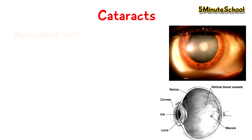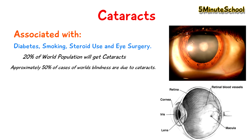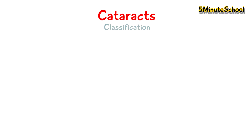Cataracts are associated with diabetes, smoking, steroid use, and eye surgery. Cataracts are quite common — it's expected that about 20% of the population will get them, and half the cases of blindness throughout the world are due to the formation of cataracts. There is a classification based on the type of cataract that a person gets.